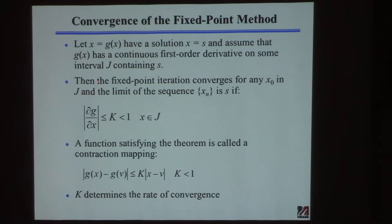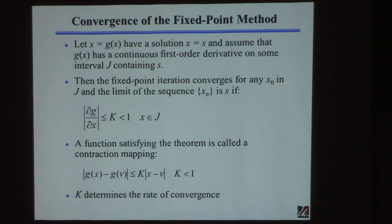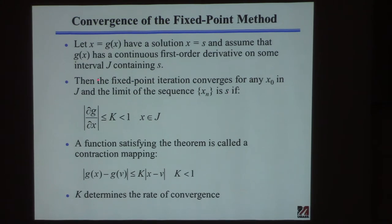Here's the restrictive part: the fixed-point iteration converges for any x0 that is sufficiently close to the solution. It's not guaranteeing that if you guess far away it will work, and it's not telling you how close 'close' is. Every problem can have a different definition of how close you need to be. But if you guess close enough, it converges to the right answer.